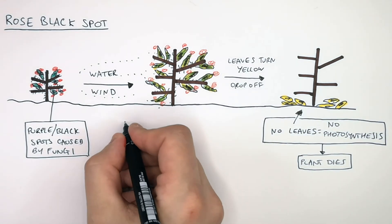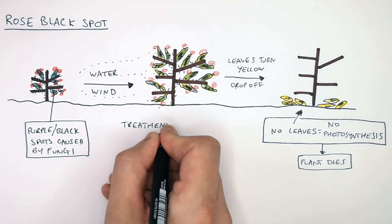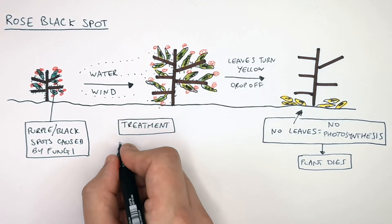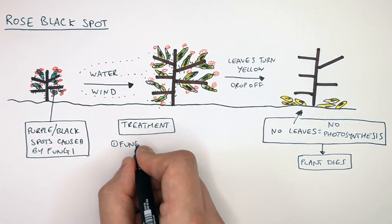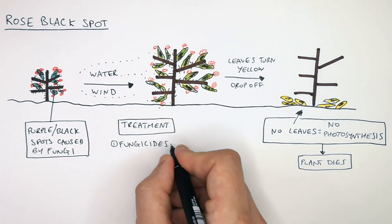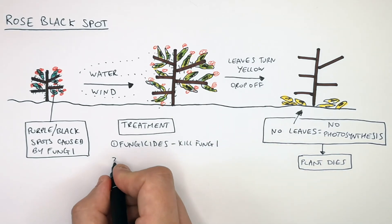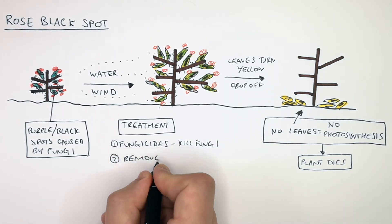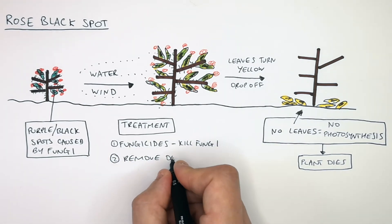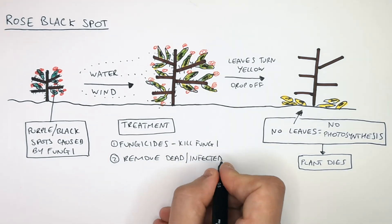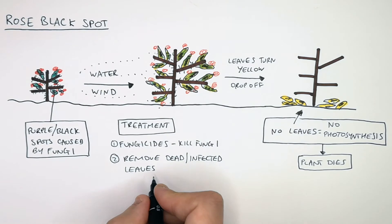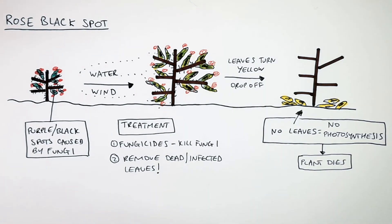The treatment for rose black spot involves fungicides, which can kill the fungi, though they may be slightly ineffective. Another treatment is to remove the dead or infected leaves from the plant to prevent the spread of the fungi around the plant.